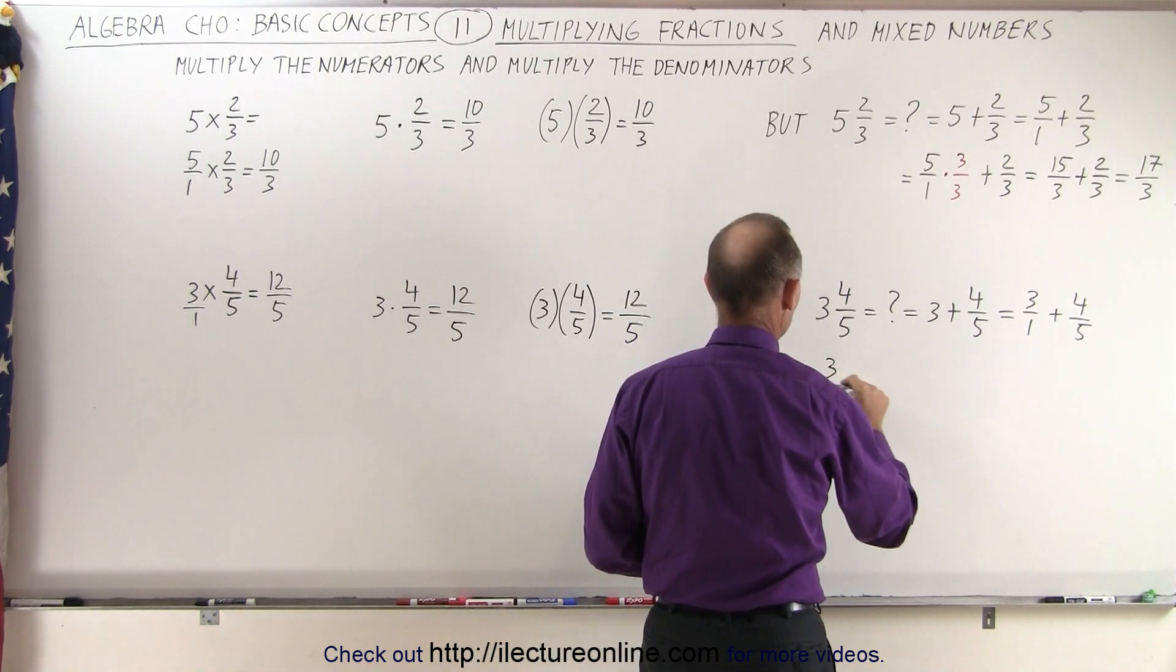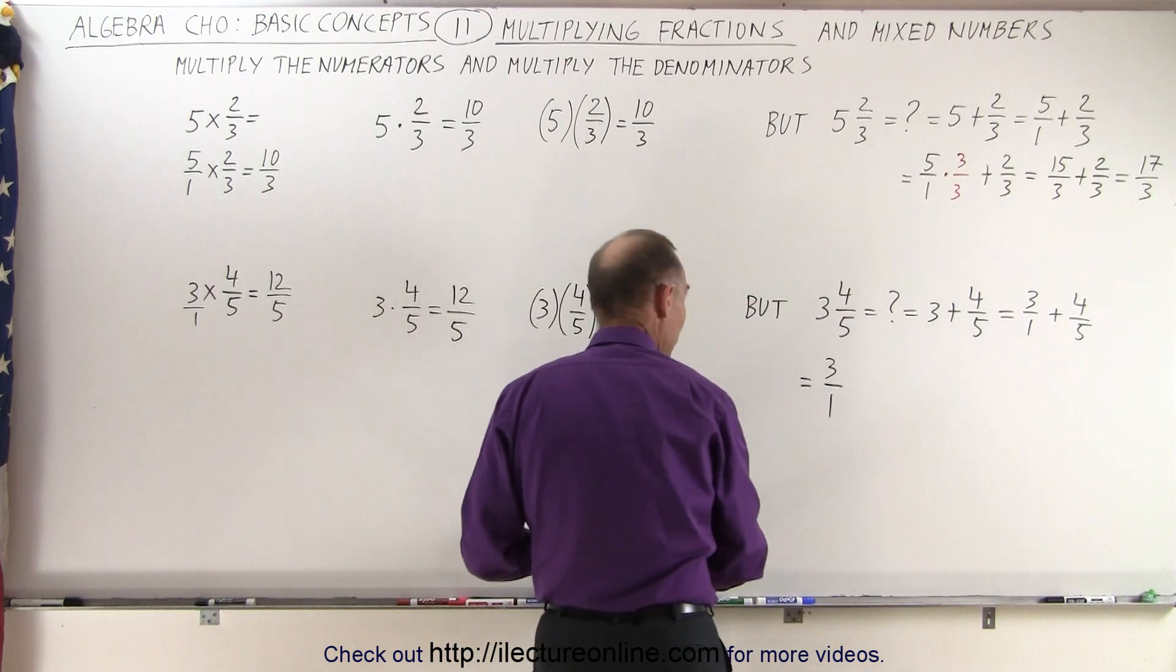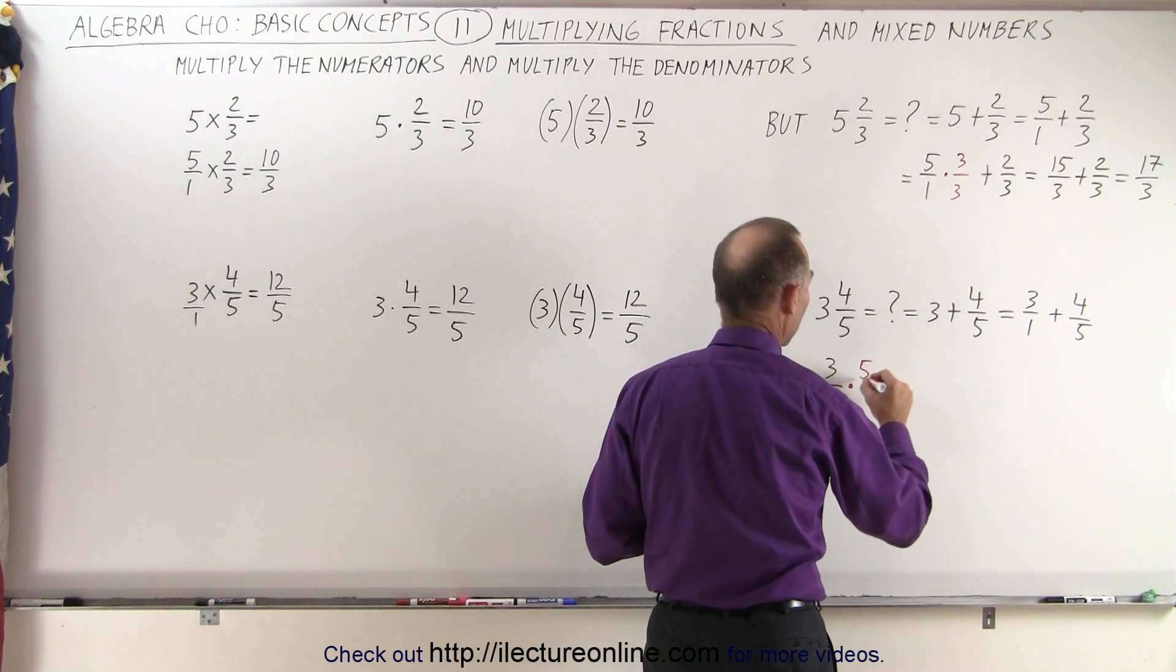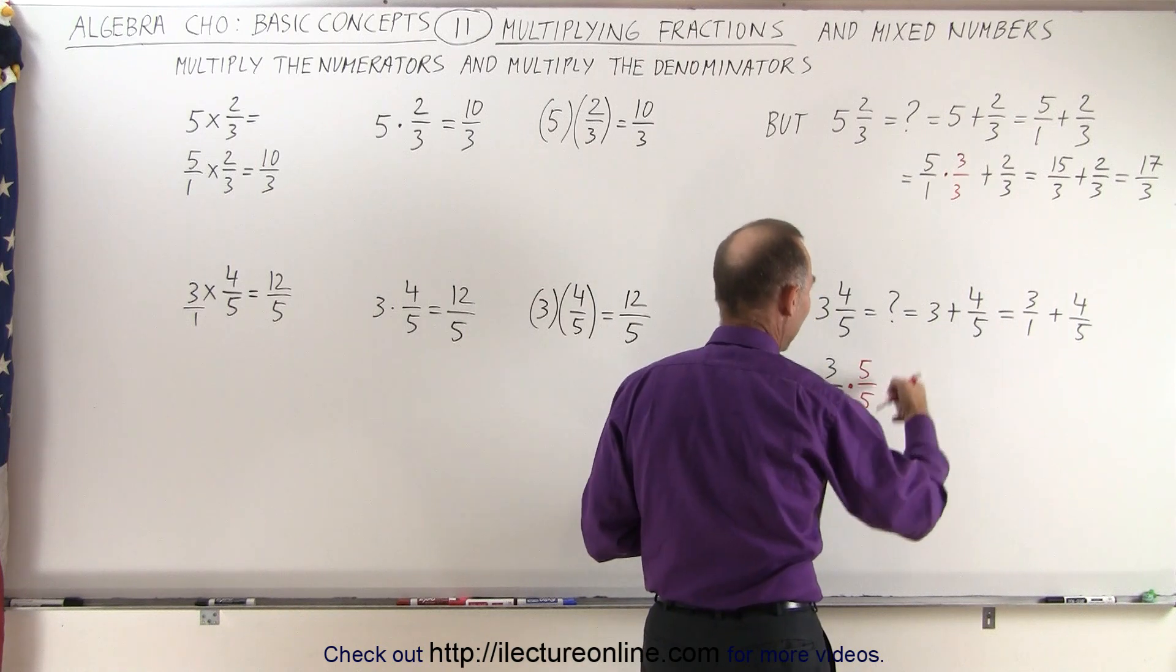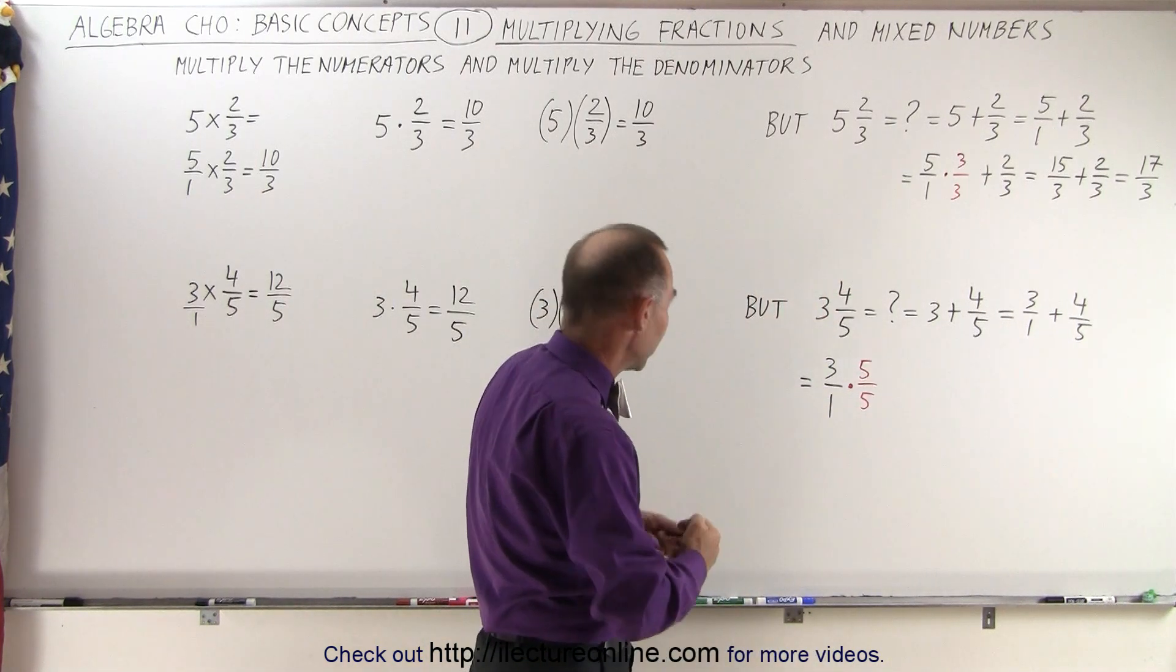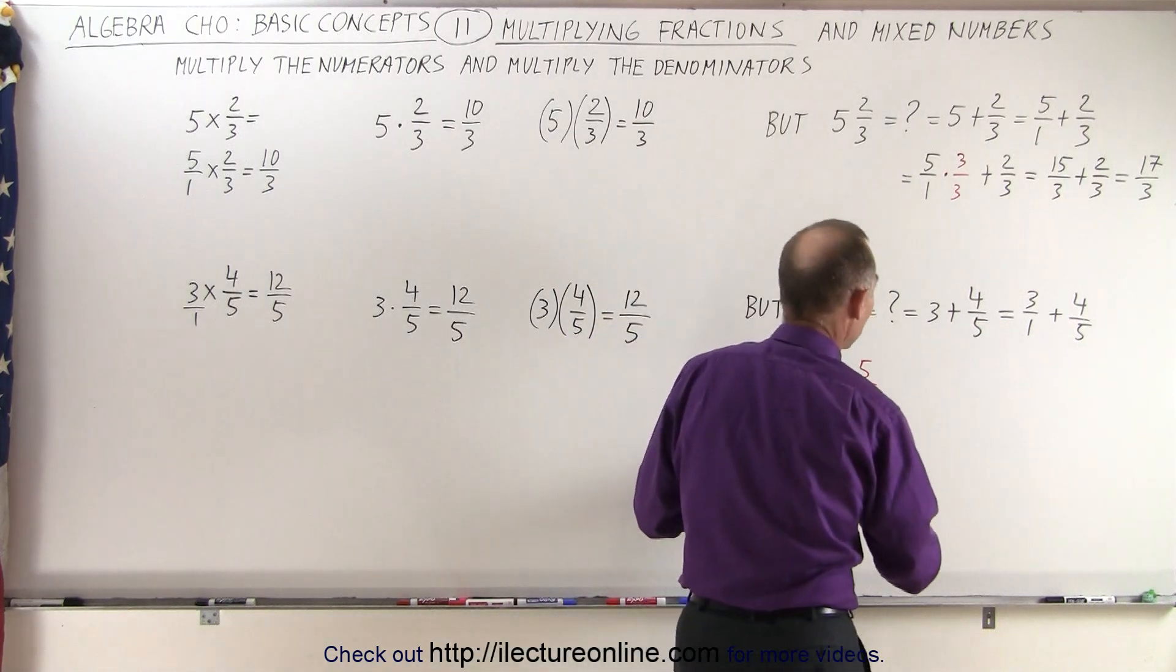Which means that this is going to be equal to 3 over 1, and of course to make the denominators the same, we have to multiply both the numerator and the denominator by 5. Again, 5 over 5 is equal to 1, so I'm simply multiplying by 1. I'm not changing anything, but at least that will give me the same denominator, and then we add that to 4 over 5.